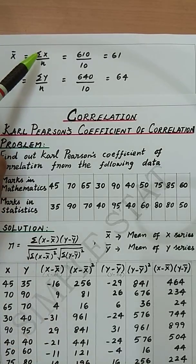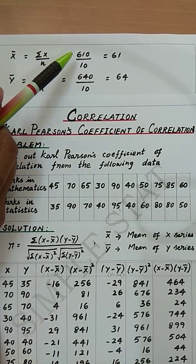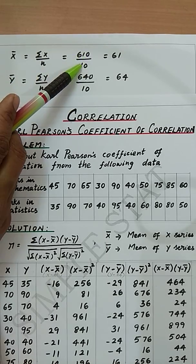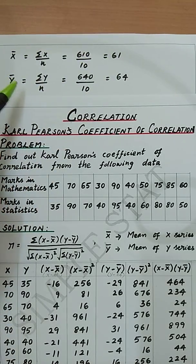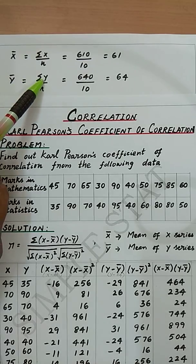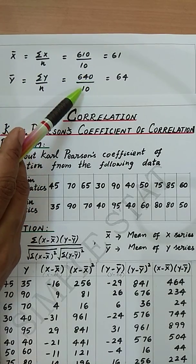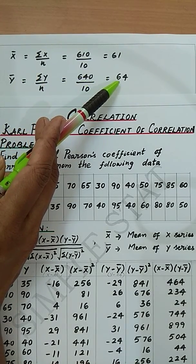x bar is given by summation x by n. We have summation x 610 divided by 10, therefore we get x bar as 61. And y bar is given by summation y by n which is 640 by 10, therefore we get y bar as 64.